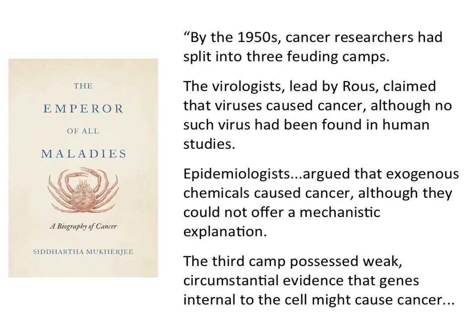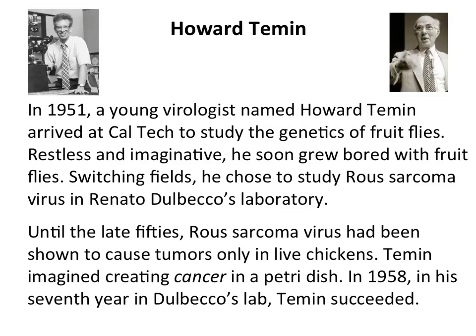By the 1950s, cancer researchers were split into three camps. The virologists led by Rous claimed viruses cause cancer, but no human cancer virus had yet been discovered. Epidemiologists said chemicals cause cancer — there was plenty of evidence for that. And others thought genes in our own cells mutated to cause cancer, but nobody had good evidence for these separate theories. Howard Temin went to Dulbecco's lab at Caltech in 1951, originally to study fruit flies, but he ended up working on Rous sarcoma virus.